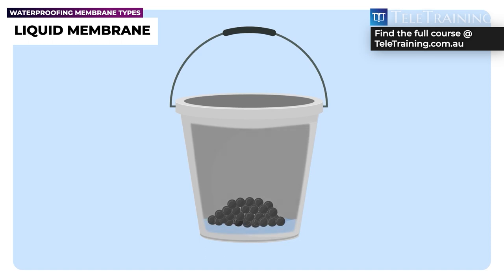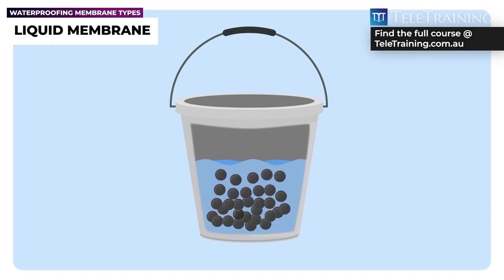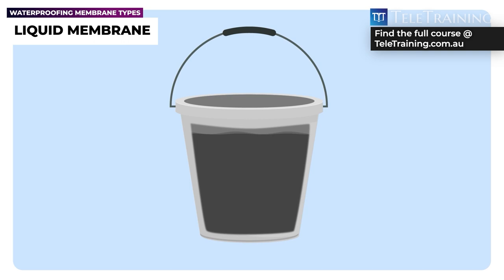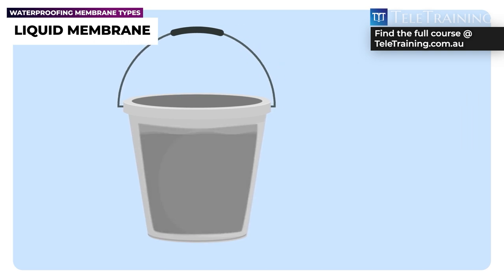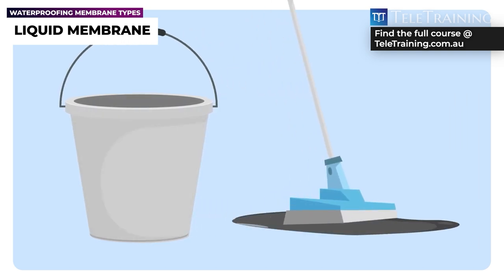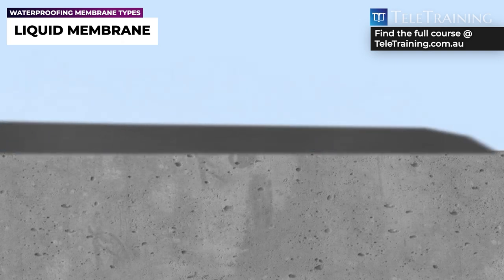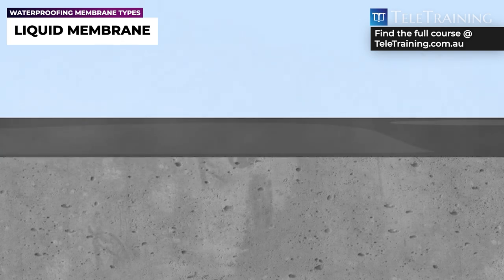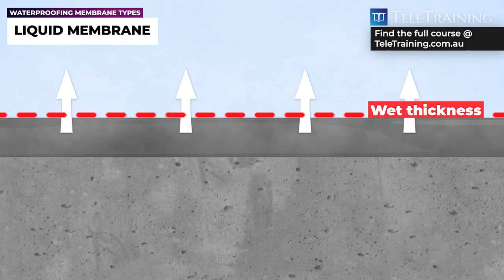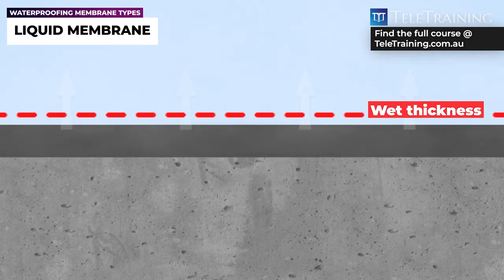Both the solvent and water in the membrane mixture dissolve the solid particles, which results in a plastic state of the membrane so that it can be easily applied. After the liquid membrane is applied to the surface, the water or solvent will evaporate, leaving the solid membrane layer behind.